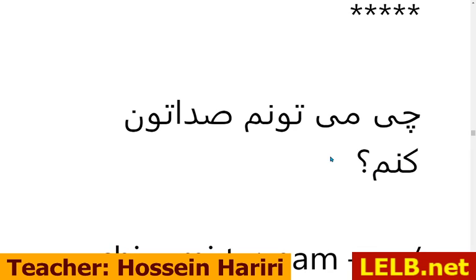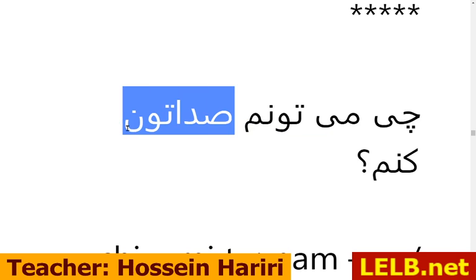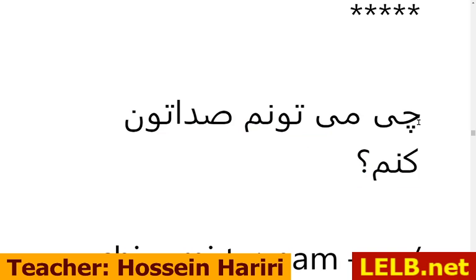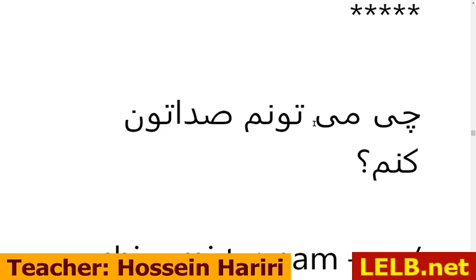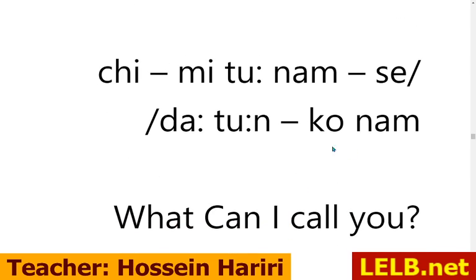Another way to ask for somebody's name: چی میتونم صداتون کنم؟ — چی means 'what,' میتونم means 'I can,' صداتون کنم means 'call you.' So the full phrase means 'what can I call you?'